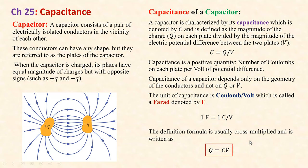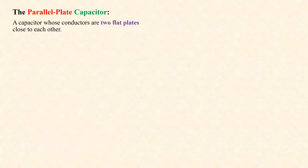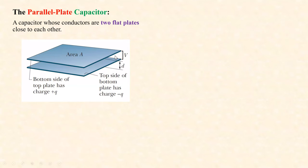To summarize: a capacitor is the device, and capacitance is its characteristic — how much charge it can carry for every volt applied across its plates. There is a special and very important type called a parallel plate capacitor: two flat plates close to each other. We denote the potential difference across them as V, the distance between them as d, and the area of the plates facing each other as A.